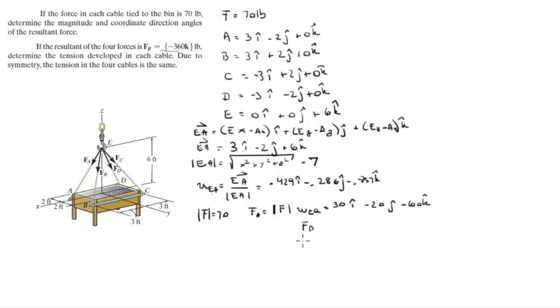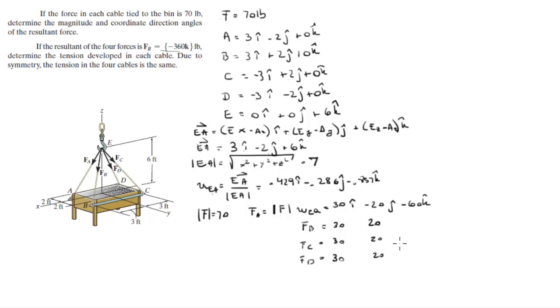Now it gets fun. We also have F_B, F_C, and F_D. Notice that the x-components are all 3, the y-components are all 2, and the z-components are all 0 — the values are the same and only the signs change. So the magnitudes are the same: 30 for x, 20 for y, and 60 for z.